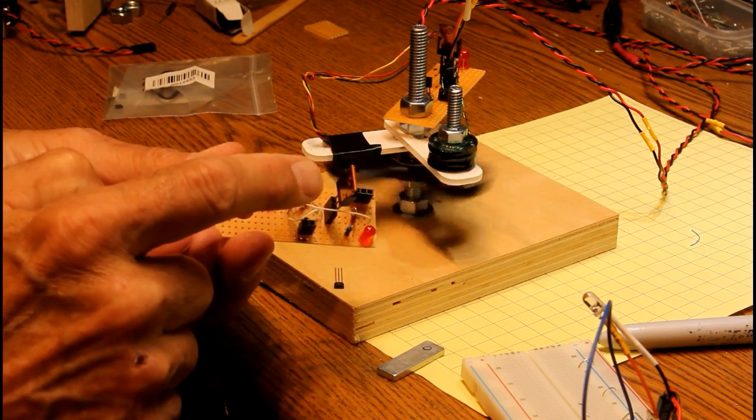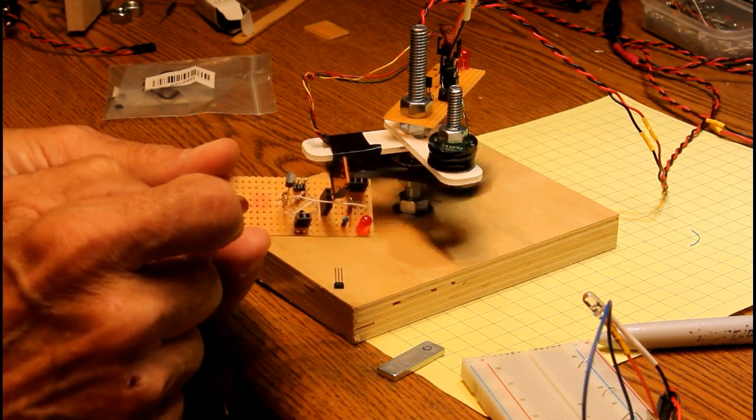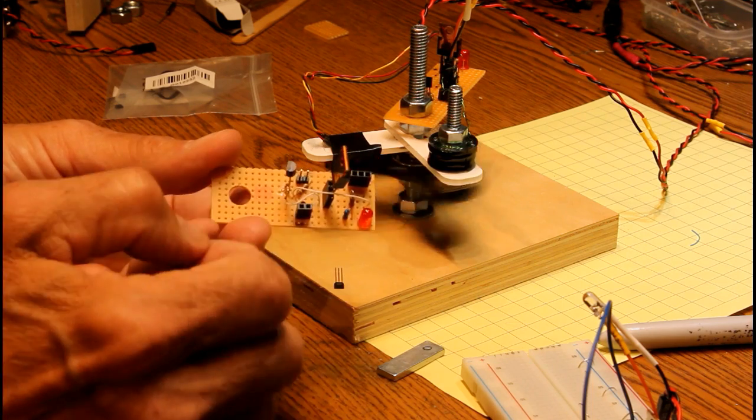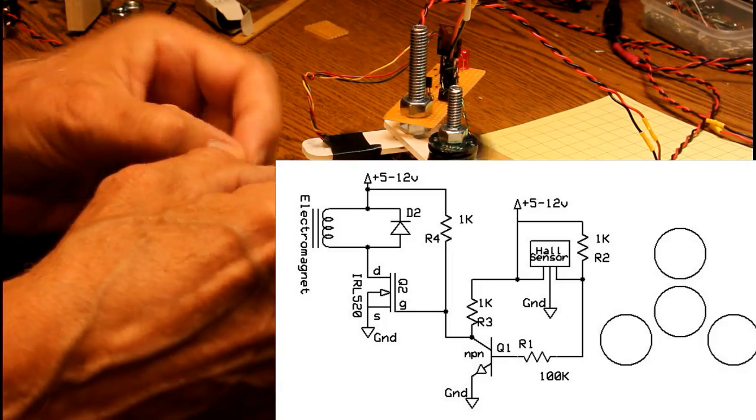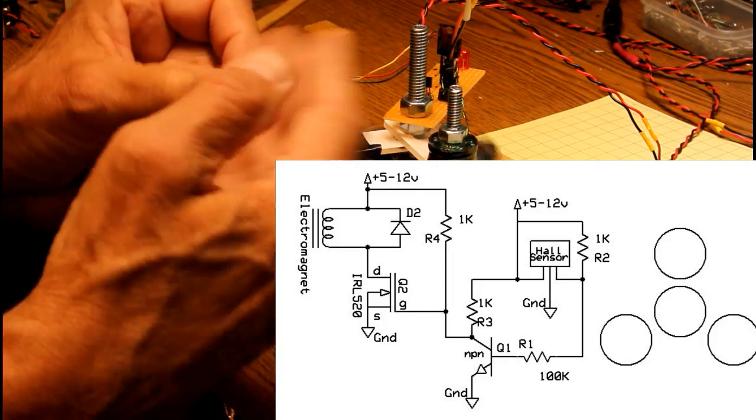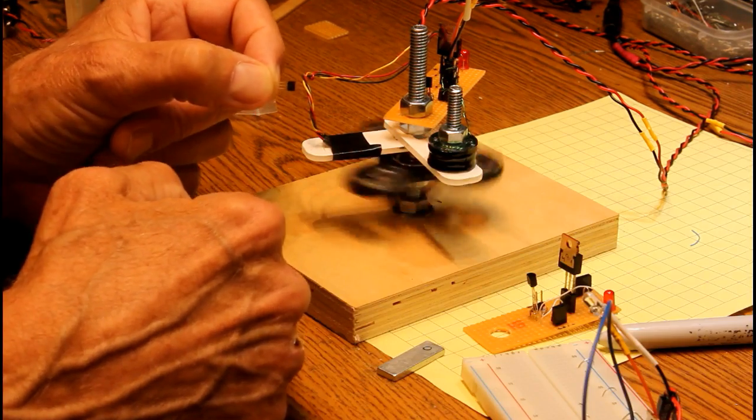In addition, there's a single NPN transistor 2N2222 that inverts that signal because the Hall Effect Sensors typically go low when they see a magnetic field. We actually need it to go high to turn that transistor on.